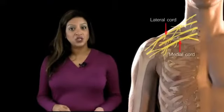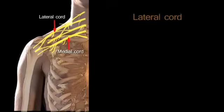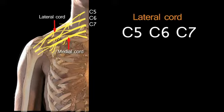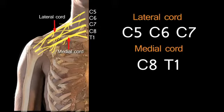The median nerve actually has contributions from both the lateral and the medial cord of the brachial plexus. From the lateral cord it has nerve root values of C5, C6, and C7. From the medial cord it has nerve root values C8 and T1. So in fact the median nerve has a contribution from all the nerve root levels.